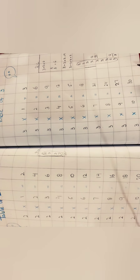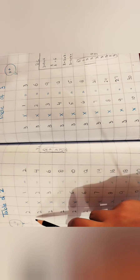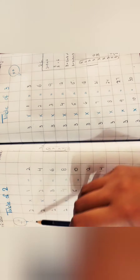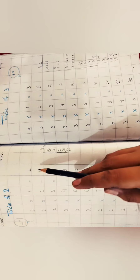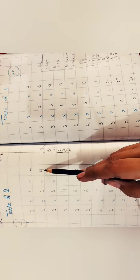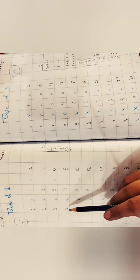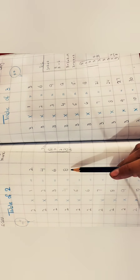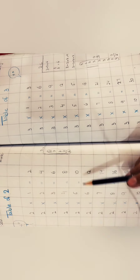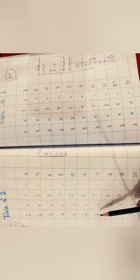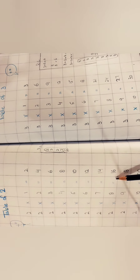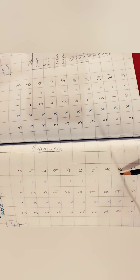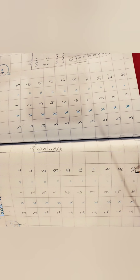Fine everyone. So this is the table of three. Now I am going to give you the review of table of two. Two ones are two, two twos are four, two threes are six, two fours are eight, two fives are ten, two sixes are twelve, two sevens are fourteen, two eights are sixteen, two nines are eighteen, two tens are twenty.